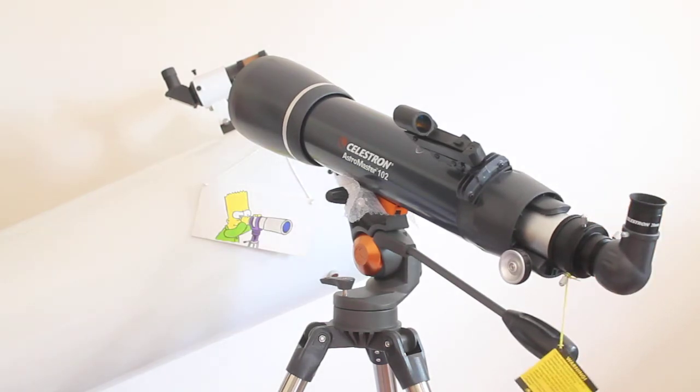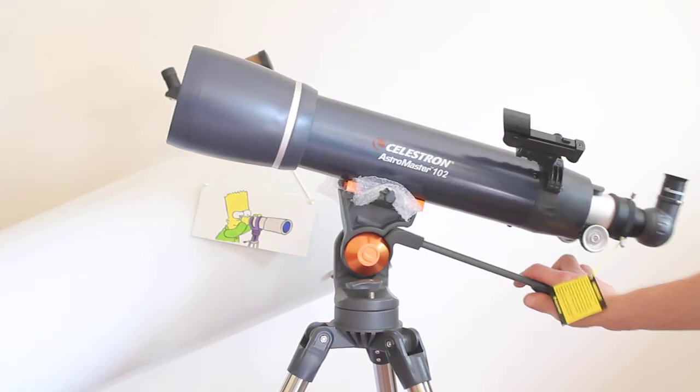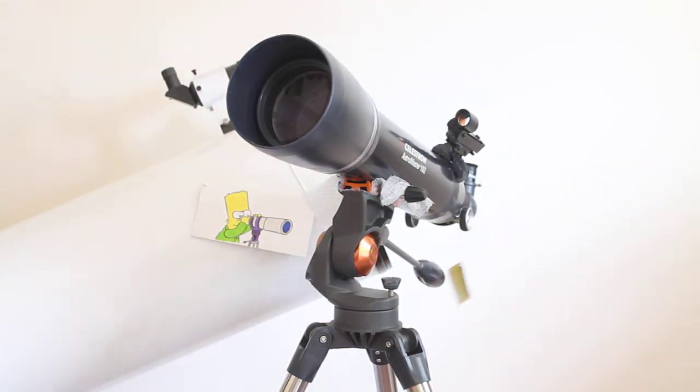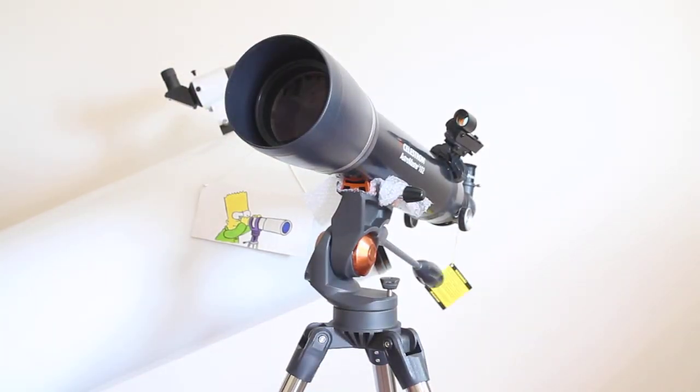102mm lens, so you're going to get lots of light gathering, and compared to the 70 millimeters, there is definitely a step up in contrast and brightness. Because it comes with basic eyepieces, there is quite noticeable chromatic aberration—that red and purple color fringing that you see around high contrast subjects.